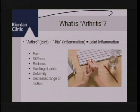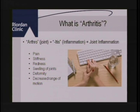We'll first start off with what exactly is arthritis. When you break down the word arthritis, you can break it into two parts: arthro means joint and itis means inflammation. So basically arthritis is a pretty general term that means joint inflammation. There are over a hundred different types of conditions and pathologies that affect our joints and cause inflammation.